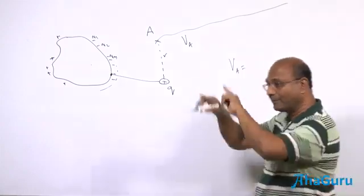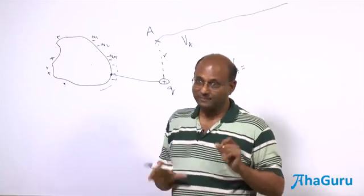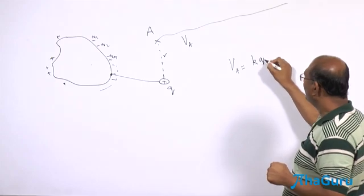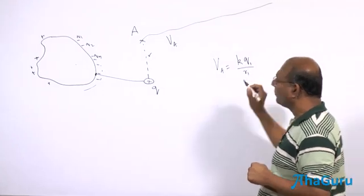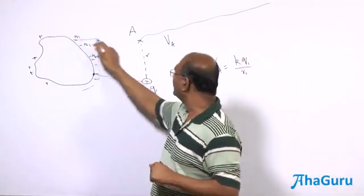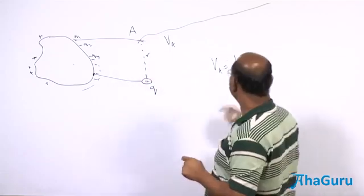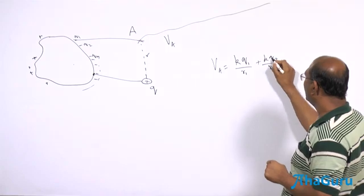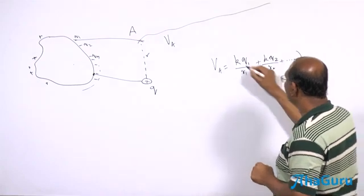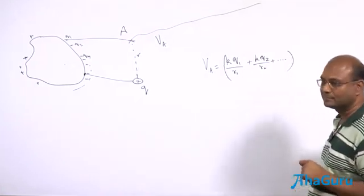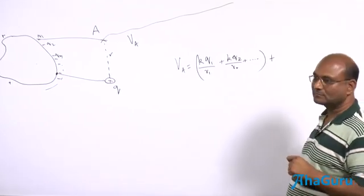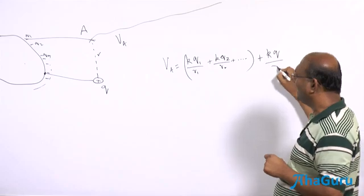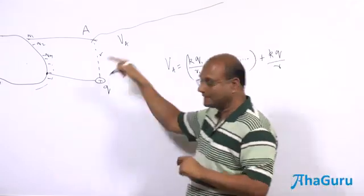It's a mess, but I can write it. I could write k Q1 by r1 where r1 would be this, plus Q2, kQ2 by r2, and so on—all this for the conductor—plus kQ by r. This is for the extra charge that we have.